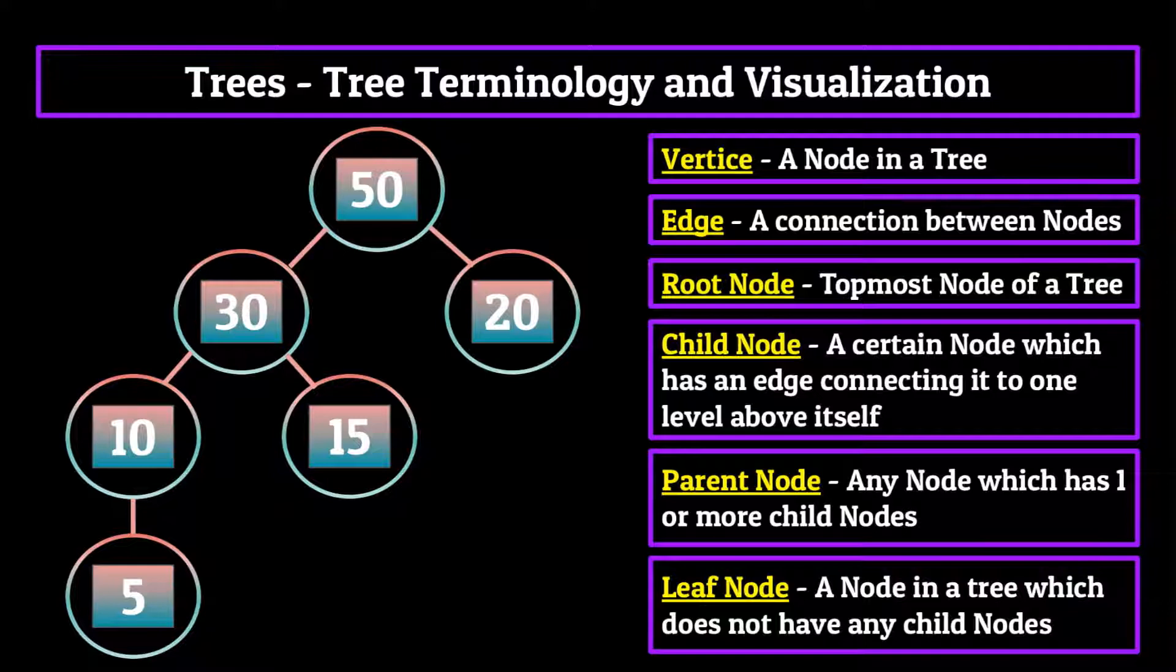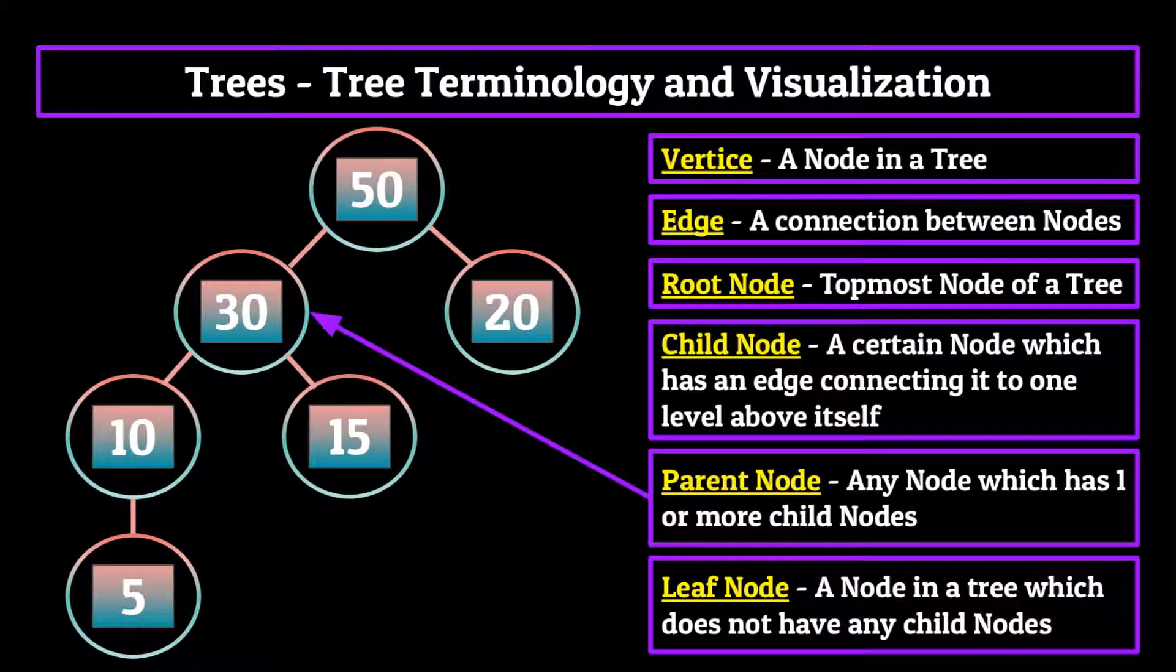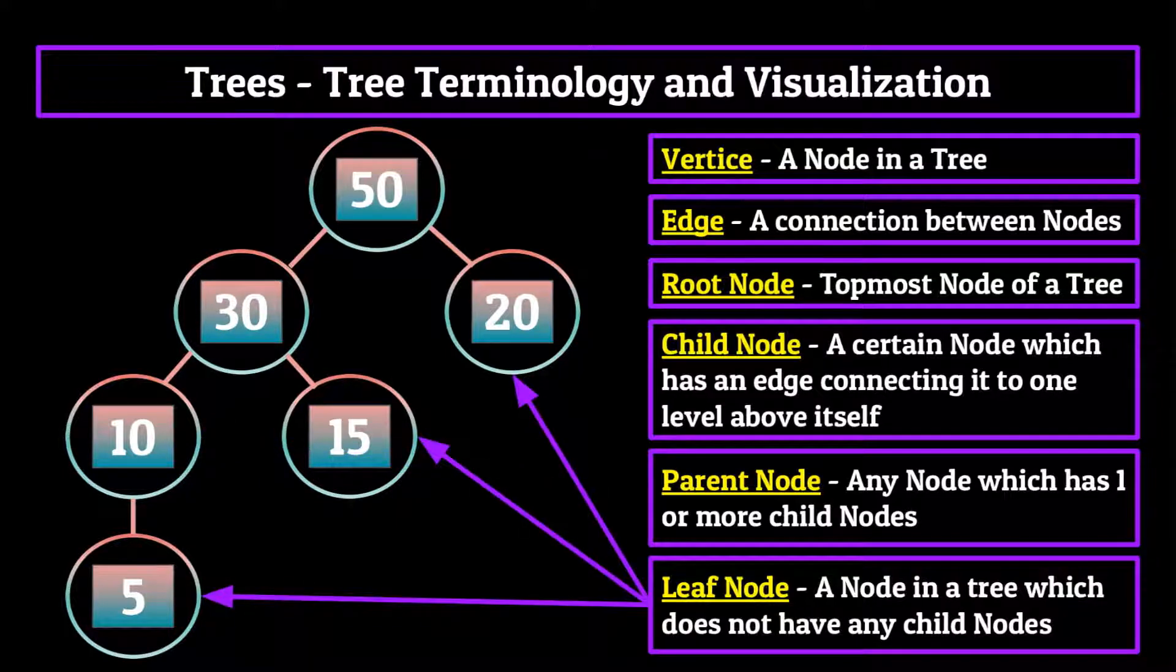As a quick review, the 50 node is the root node, the 20 and 30 nodes are children of that root node, and the root node is thus the parent of the 30 and 20 nodes. Then, the 10 and 15 nodes are children of the 30 node, and the 30 node is a parent to both the 10 and 15 nodes. The 5 node is a child of the 10 node, and the 10 node is a parent to the 5 node. Finally, the 5, 15, and 20 nodes are all leaf nodes because they do not have any children.